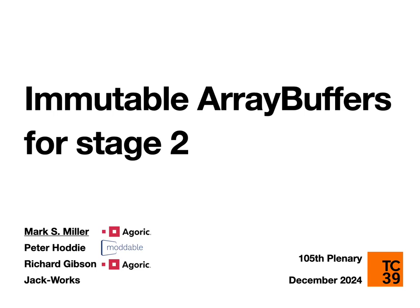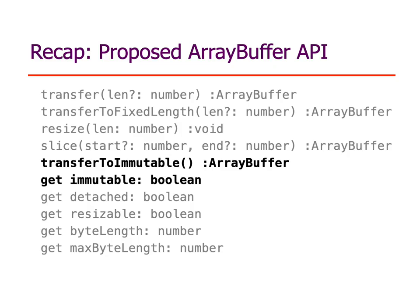Immutable array buffers for stage two. Last meeting we got to stage one. To recap, the gray here is the existing array buffer API, and the proposal would add at least these two features: a transferToImmutable method that returns an array buffer with the immutability flavor, and an immutable accessor that is true for those array buffers that have the immutable flavor.